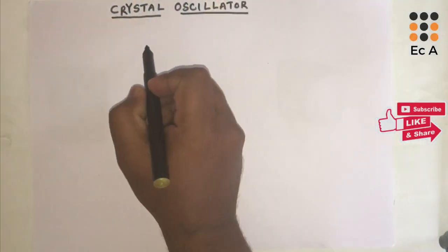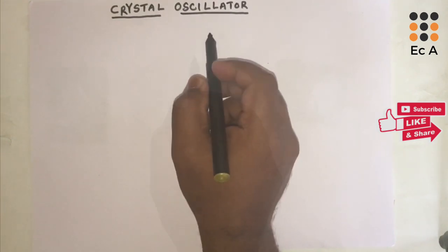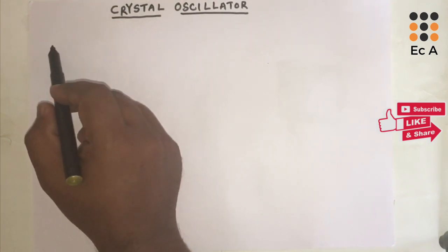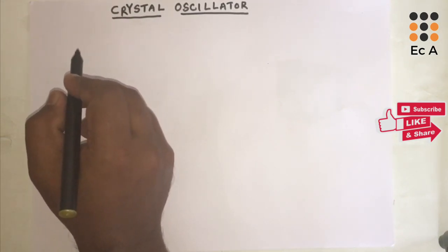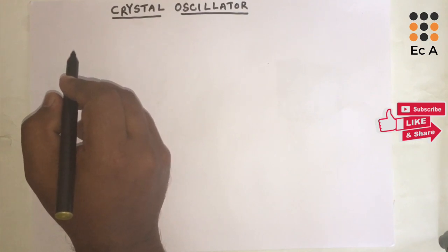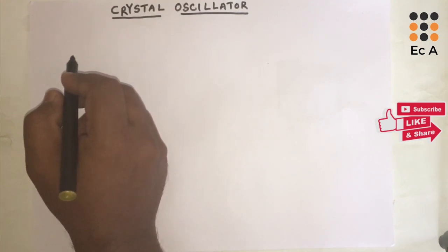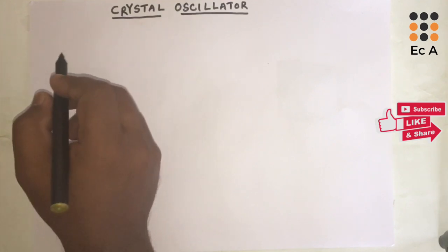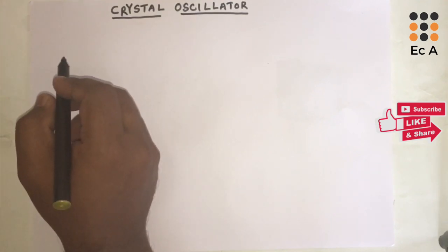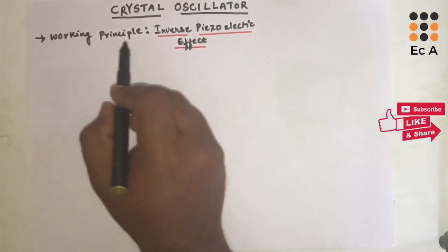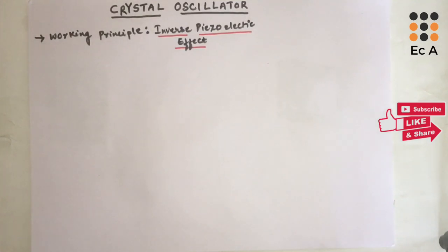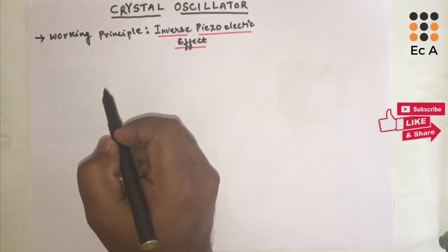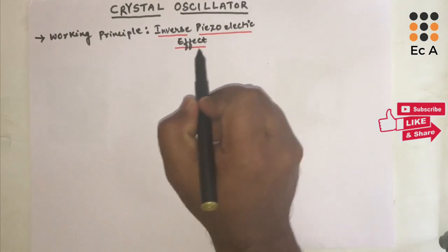Welcome to EC Academy. In this lecture, let us understand crystal oscillator. A crystal oscillator is basically a tuned oscillator — it is the same as a tuned oscillator except it uses a piezoelectric crystal instead of an inductor. It works on the principle of inverse piezoelectric effect. Before going to the operation of crystal oscillator, we need to understand what is piezoelectric effect and what is inverse piezoelectric effect.